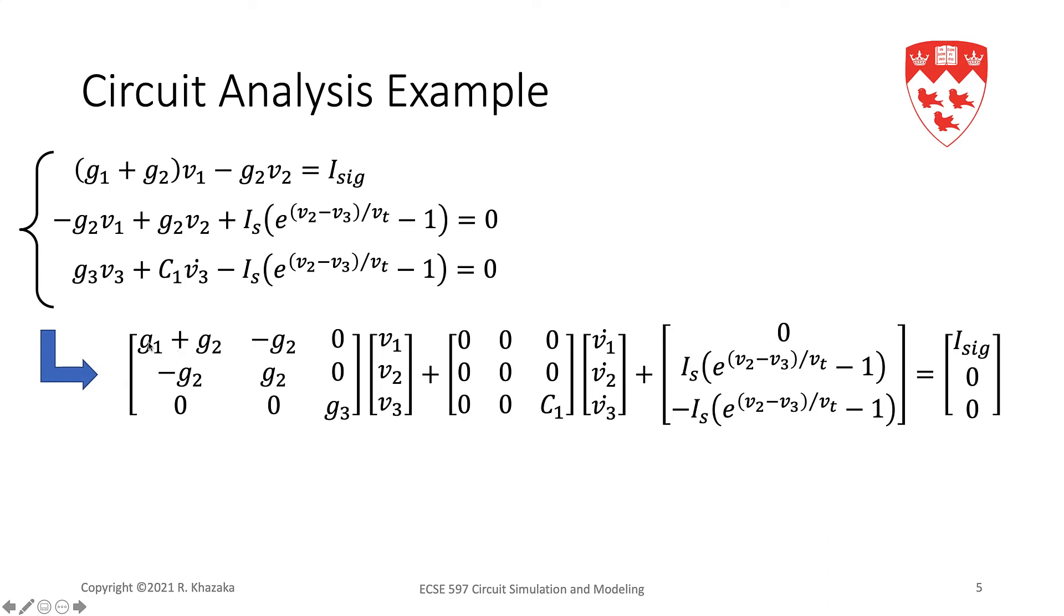For example, the first row is (G1 + G2)*V1—that's the first term over here—minus G2*V2, which is the second term over here, equals ISIG, which is the right-hand side.